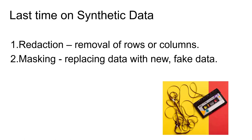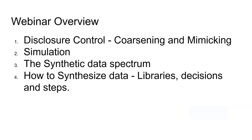In our last webinar, we covered redaction, which is a method of disclosure control involving removing entire rows, columns, or parts of the data. We also covered masking, another method of disclosure control where we replaced data with new and hopefully clearly fake data. In this webinar, we'll finish off those disclosure control methods covering coarsening, mimicking, and then dive into case studies on simulation.